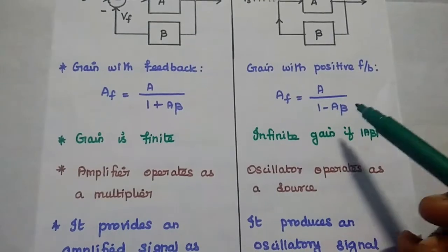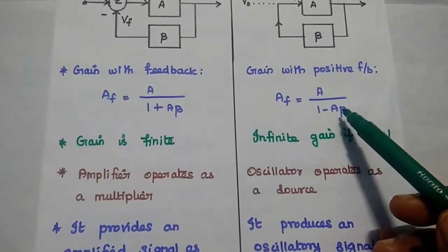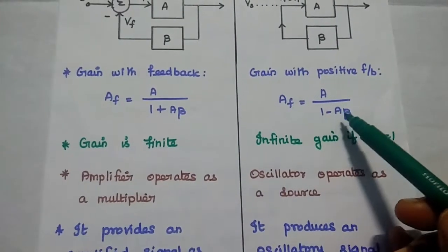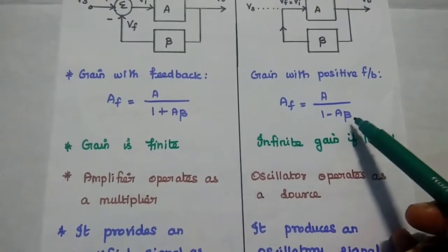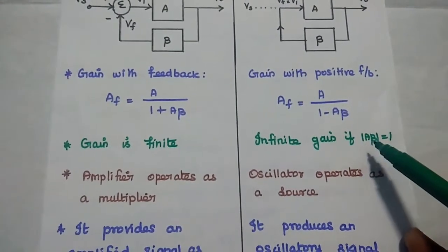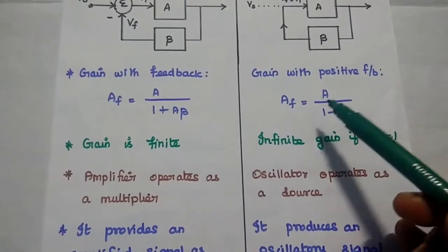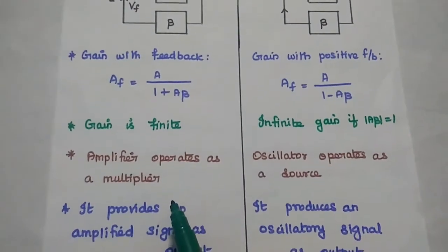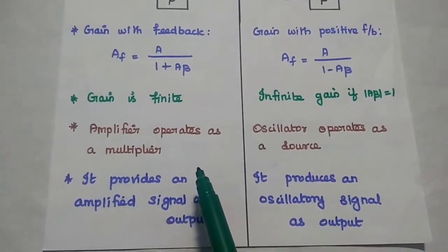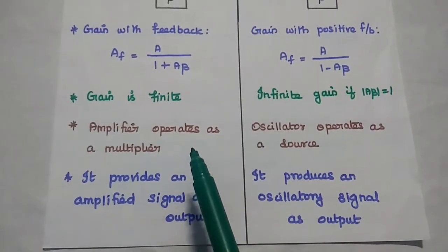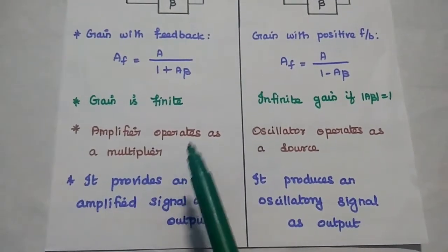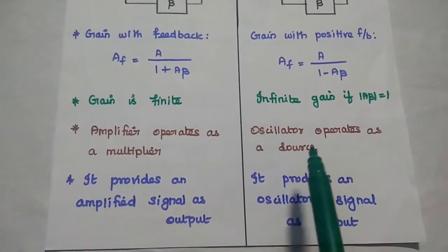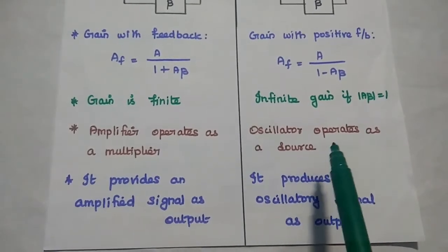But for this oscillator, if the loop gain — Aβ is known as loop gain — if this value is equal to 1, then 1 minus 1 equals 0, and anything divided by 0 is infinite. So if loop gain Aβ equals 1, the gain of this oscillator becomes infinite. The amplifier operates as a multiplier because it increases the amplitude of the input signal. The oscillator operates as a source because it generates the waveform.